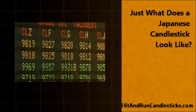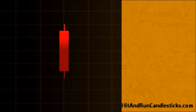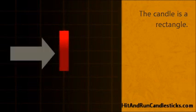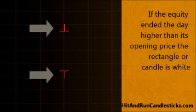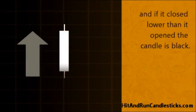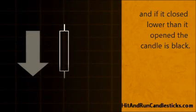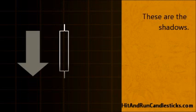Just what does a Japanese candlestick look like? A Japanese candlestick is comprised of a candle and one or two shadows. The candle is a rectangle. The top and bottom represent the opening and closing prices for the equity for the day. If the equity ended the day higher than its opening price, the rectangle or candle is white. And if it closed lower than it opened, the candle is black. Trading that occurred outside of the opening and closing prices is displayed as lines rising above and falling below the candle — these are the shadows.